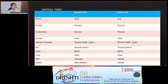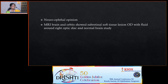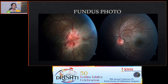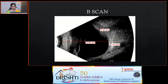He was advised neuro-ophthalmic opinion; MRI brain and orbit showed subretinal soft tissue lesion with fluid around the optic disc and normal brain study. When he presented to us three days later, BCVA was 6/36 in the right eye, left eye 6/6. Anterior segment examination revealed nasal episcleral congestion, anterior segment was quiet, IOP was 16 mmHg. Fundus examination showed disc edema extending to the peripapillary area, surface hemorrhages on disc, subretinal fluid surrounding the disc with venous tortuosity. B-scan showed retinochoroidal thickening around the optic nerve head.